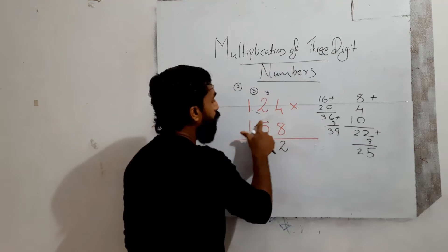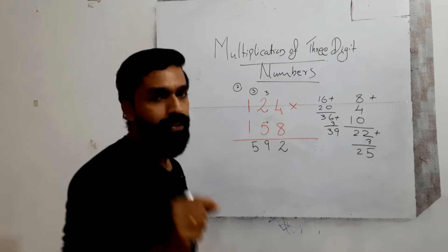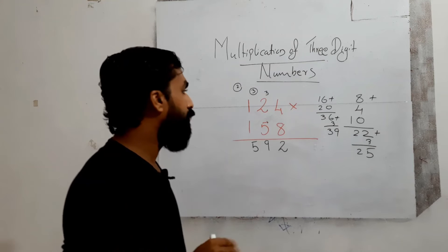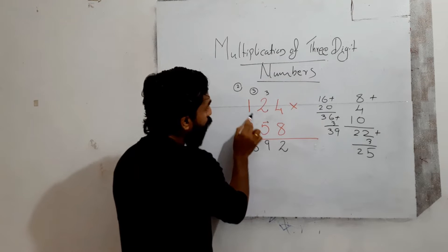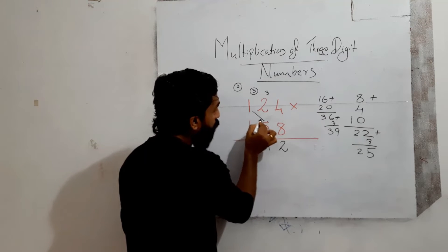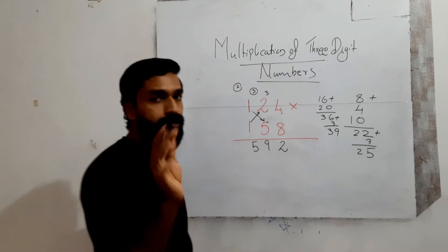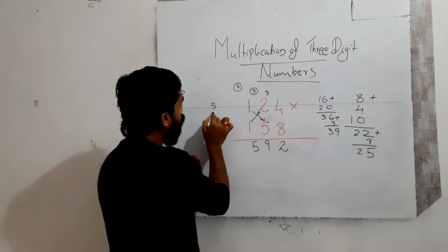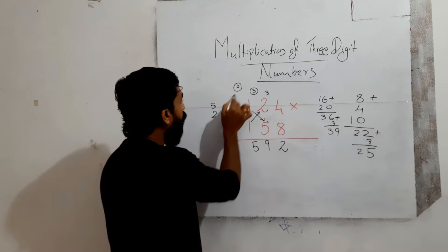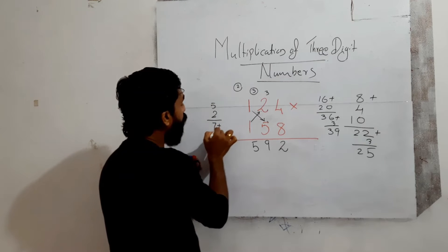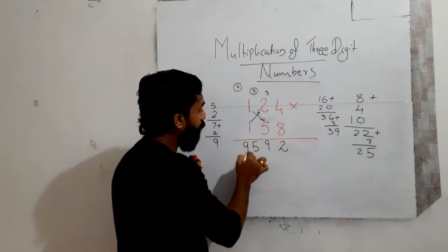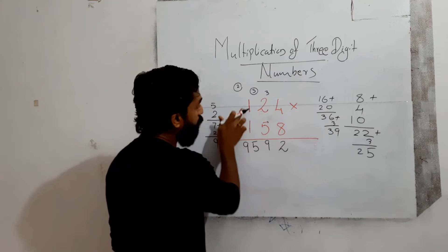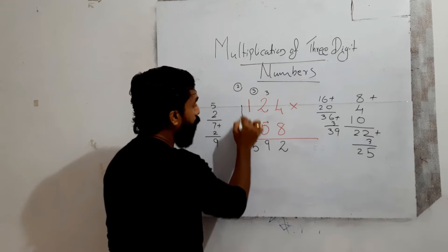If you know your multiplication tables fluently, you can write the answers very easily. Next: 1 into 5 is 5 and 1 into 2 is 2 — cross multiply the last two leading digits: 5 plus 2 equals 7. Add the carry of 2: 7 plus 2 equals 9. Write 9 here, nothing is carry over. Finally, multiply the leading digits: 1 into 1 equals 1.